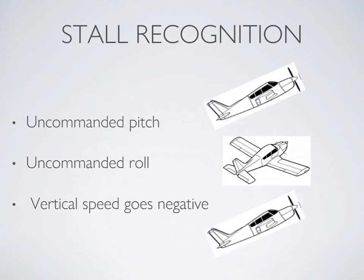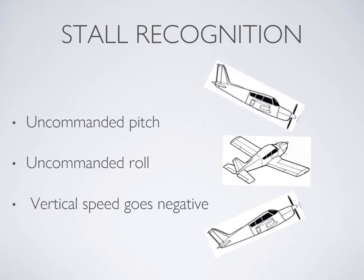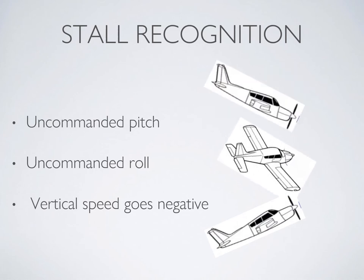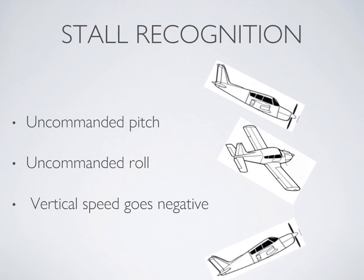You can recognize a stall by looking for three key indicators: uncommanded pitch, uncommanded roll, or the VSI just goes negative. The most common indicator you'll see if you've done a proper stall entry is the nose drop, or uncommanded pitch. It may catch you off guard because you'll have the yoke pulled all the way back and the aircraft will suddenly nose down uncommanded. You might see a combination of all three of these. Once you've recognized the stall, get into the habit of announcing it — verbally call out "stall."